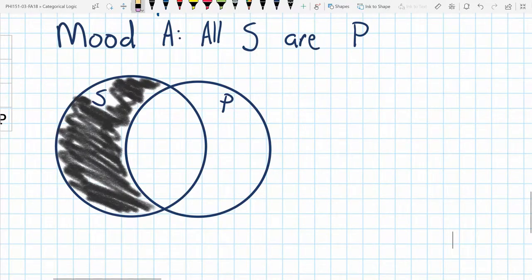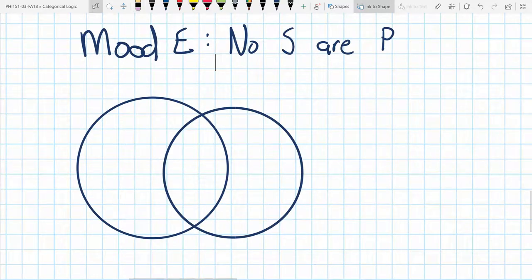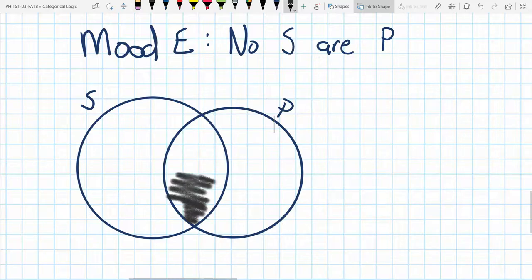Now let's move to mood E. Mood E, no S are P. This is also equal to the statement, no P are S. So when we think about S and P, we'll use our shading because we want to exclude an entire region. So we will shade in region two. And just like with mood A, we don't know if there's any S's or P's, or even if there are things that are not S and not P. So we leave those things blank.